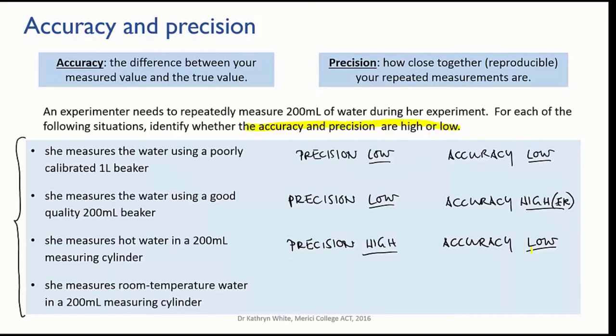It's worth noting here that volumetric glassware, like measuring cylinders and burettes and volumetric flasks, are calibrated to be used at room temperature, usually 20 or 25 degrees C, for precisely this reason. And in fact, most measuring instruments will have a temperature range in which they are most accurate, because of the expansion and contraction of matter with temperature.